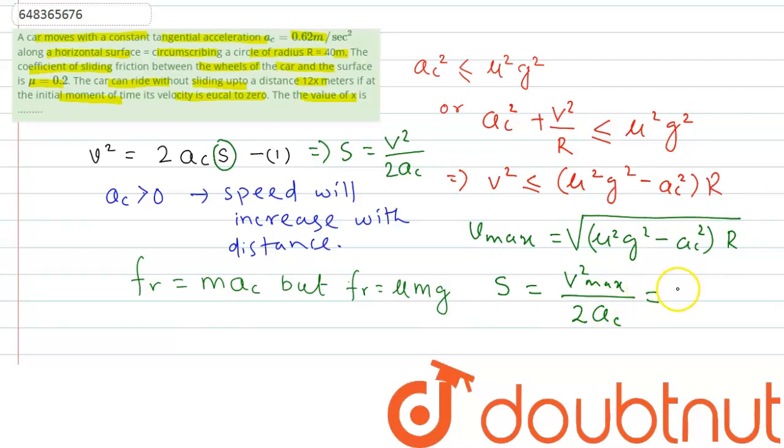So now let us put these values. So we have 1 by 2 into root over of this is mu g divided by AC, this whole square minus 1. So this is the thing we have. Now we know that this AC is nothing but 12x, and if we calculate this we will get 60 meter. Now our x will come out to be 5 meter.